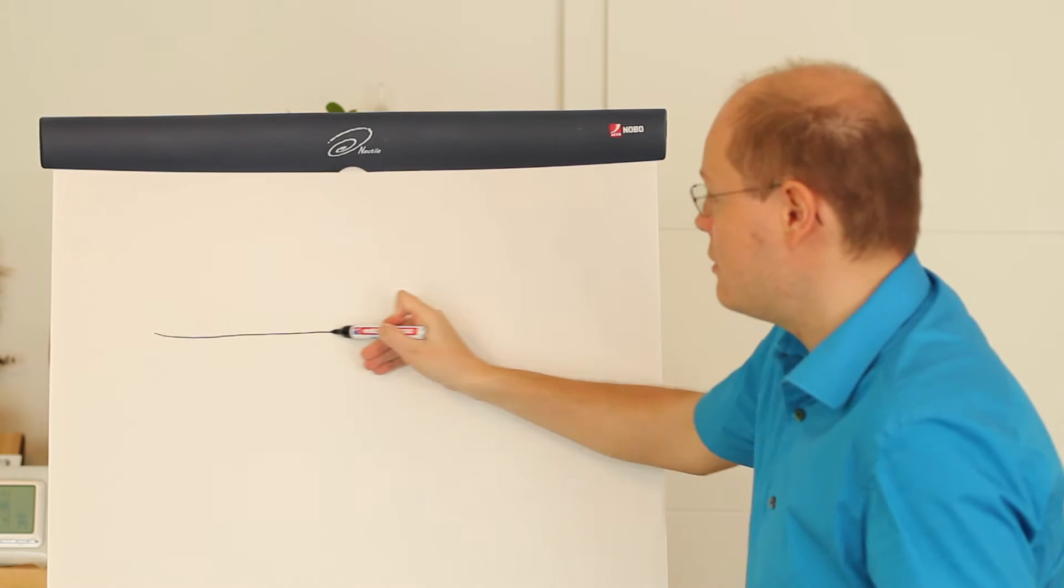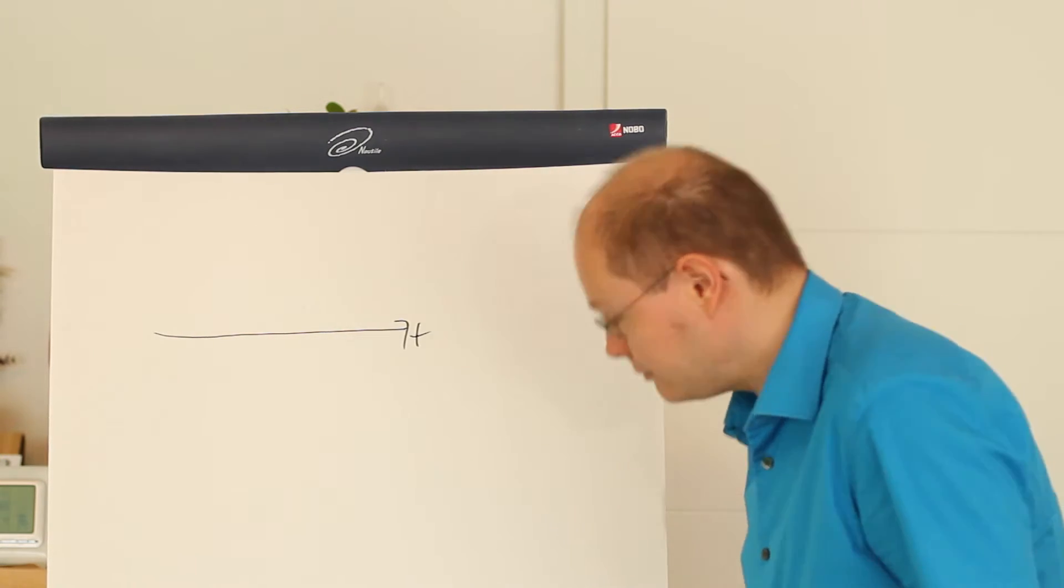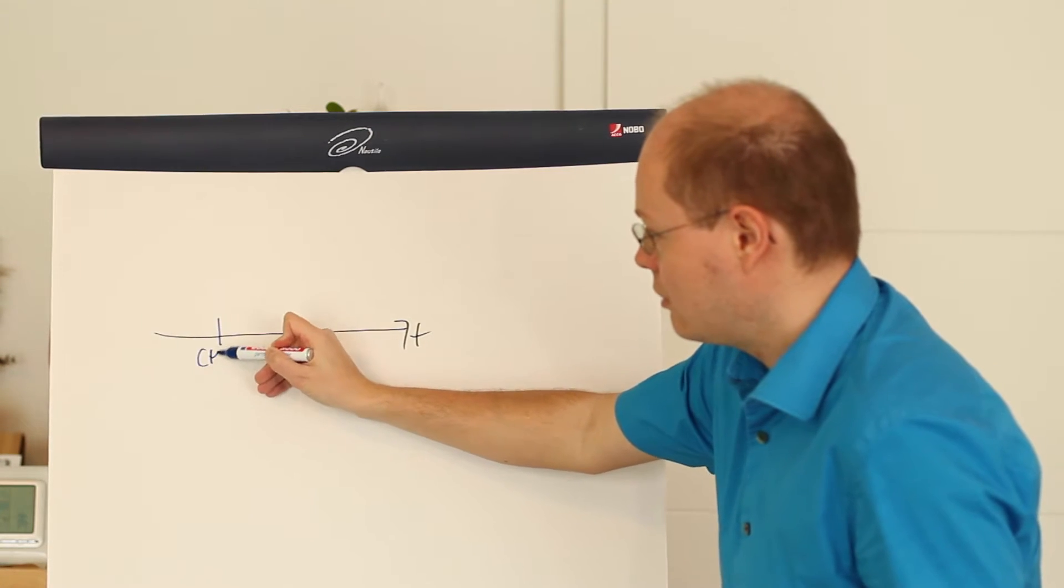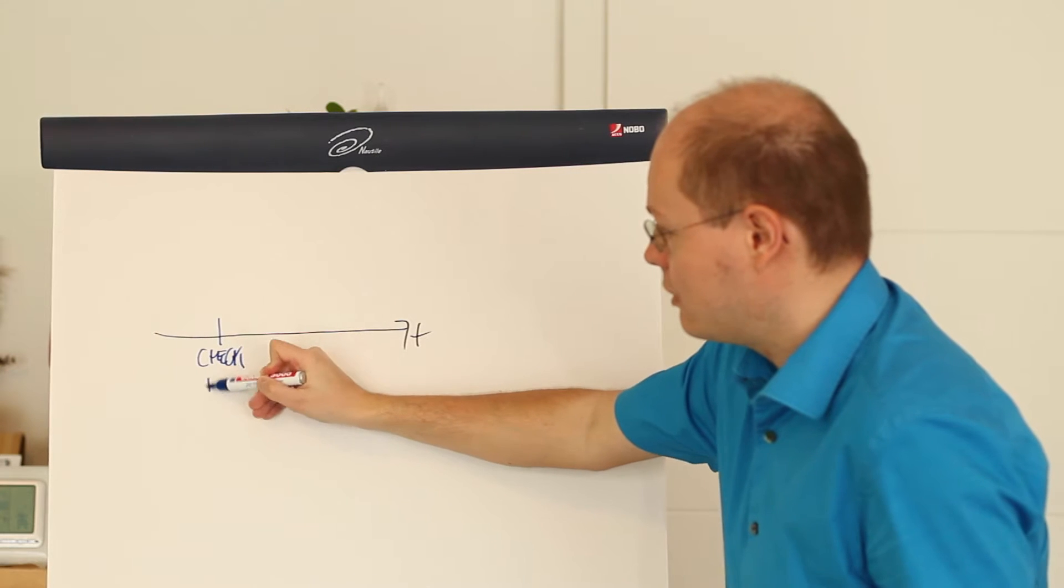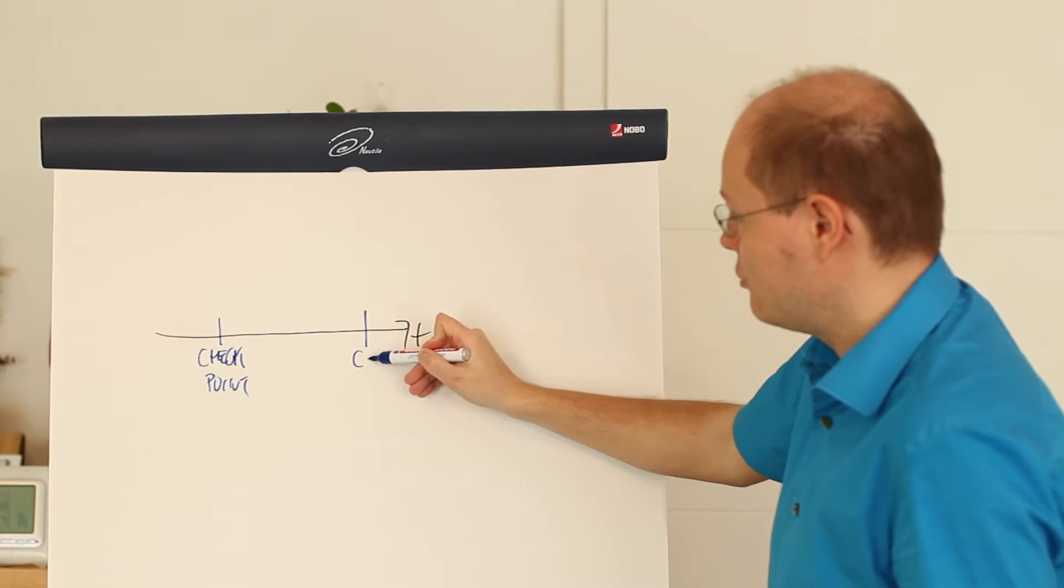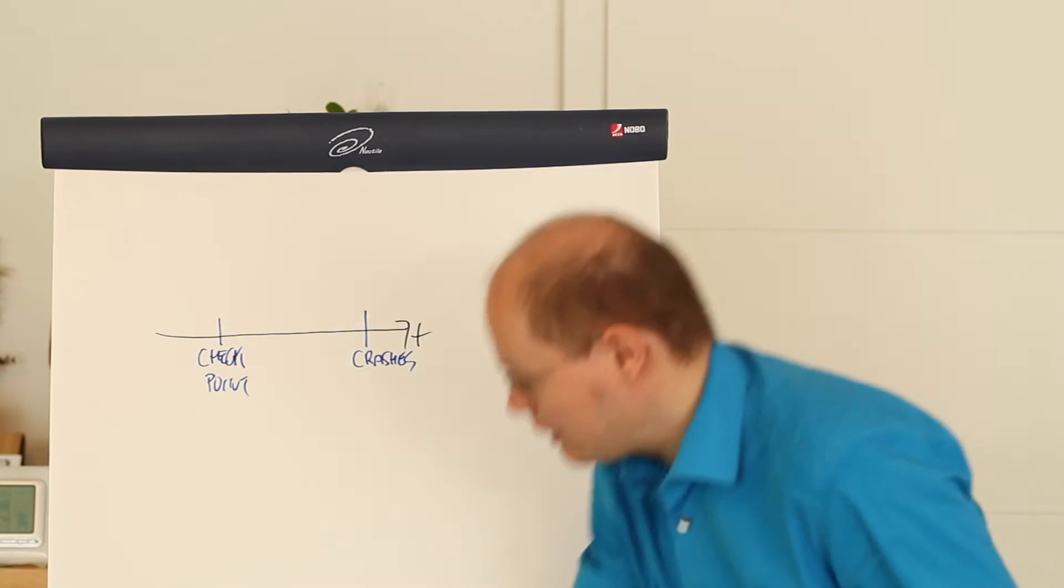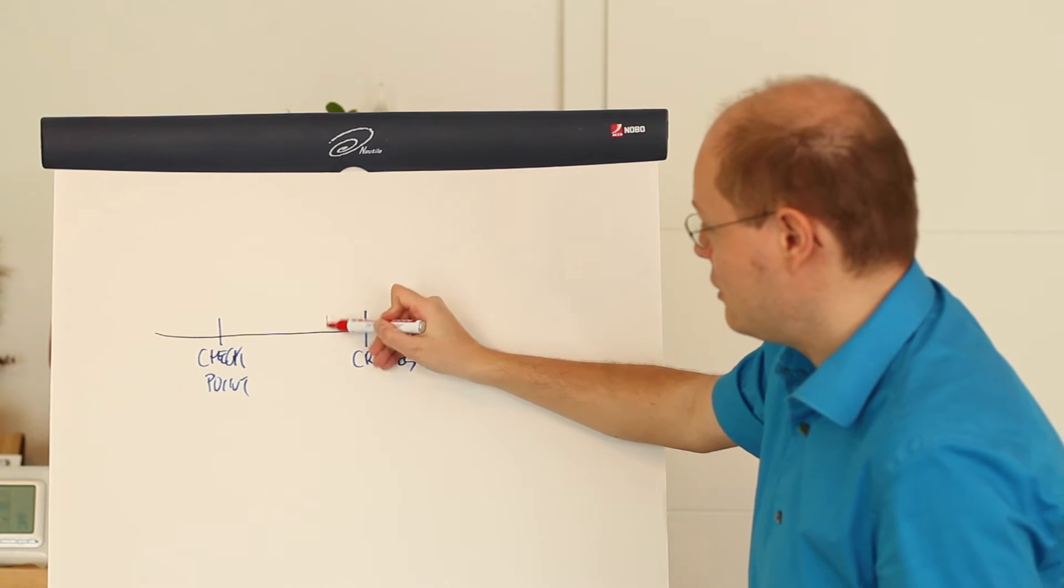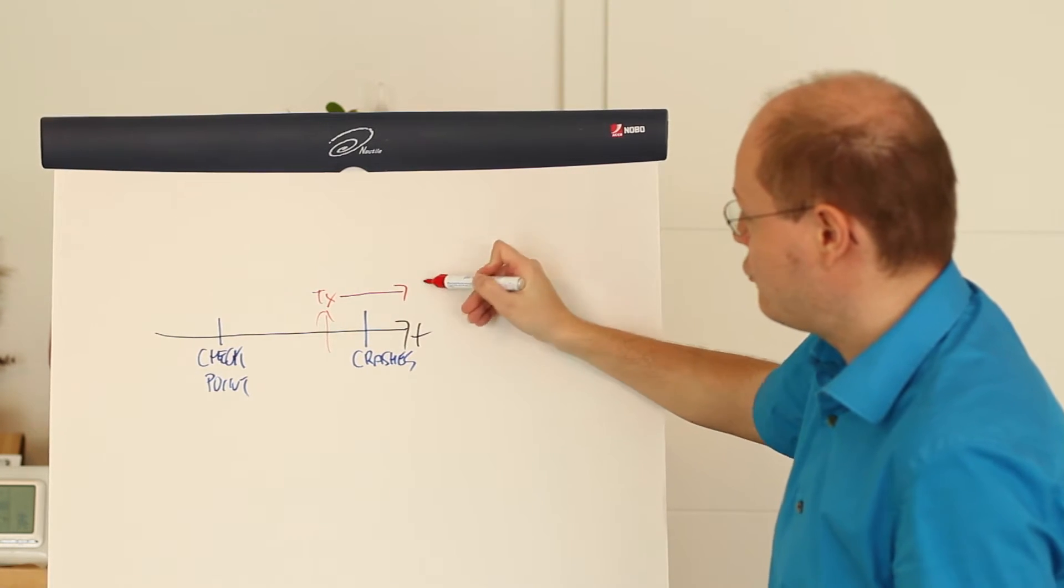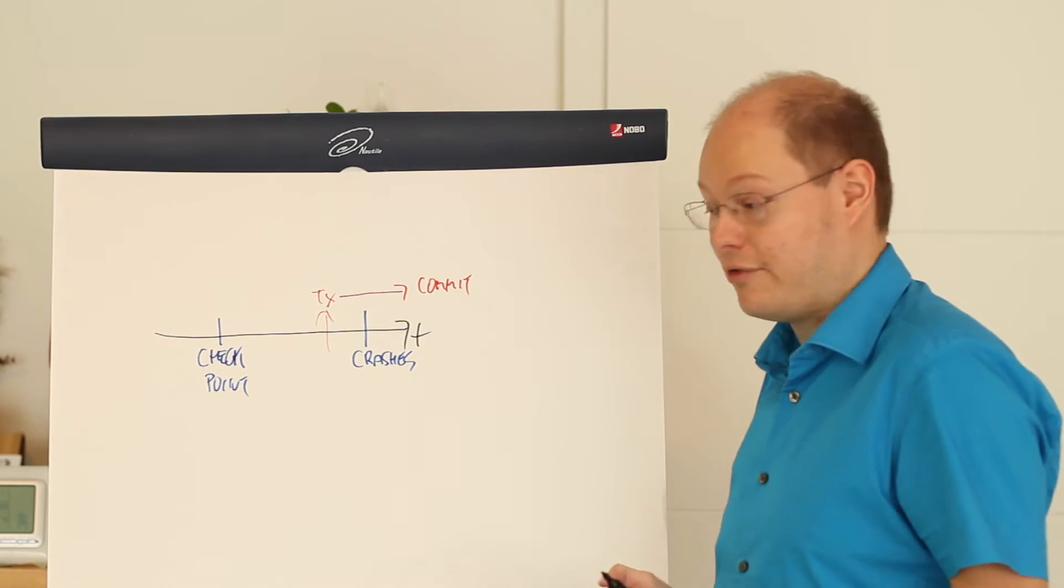Imagine we have here our timeline and let's say we have performed here a checkpoint process and our SQL Server crashes here. In addition, imagine we have started here a transaction and that transaction would commit in the future after the crash.